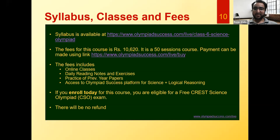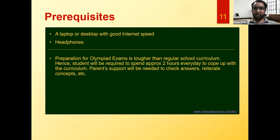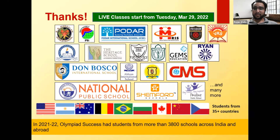The fees for this course is ₹10,620 and the course duration is 50 sessions. The fee includes online classes, daily reading notes and exercises, practice of previous year papers, and access to mock tests for science and logical reasoning. Students who enroll today will get a free CREST Science Olympiad exam. You need a laptop with good internet speed and if possible a headset. Olympiad exams are tougher than your school curriculum as there are some topics from upper grades also. Classes for this course will start from 29th March. We currently have students from 3,800 plus schools catering to 35 plus countries.